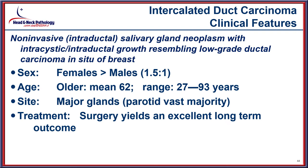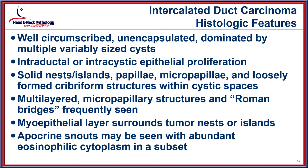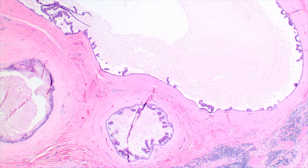Intercalated duct carcinoma used to go by the name intraductal carcinoma — a non-invasive lesion resembling low-grade ductal carcinoma of the breast. However, since these lesions may sometimes invade, intercalated duct carcinoma is the more correct name. They are usually well-circumscribed and unencapsulated with multiple cysts, having epithelial proliferation arranged in papillary or micropapillary architecture or forming Roman bridge-type lesions, all held within an intact myoepithelial layer. The tumor has two major subtypes: the intercalated duct type and an apocrine type with a unique molecular profile.